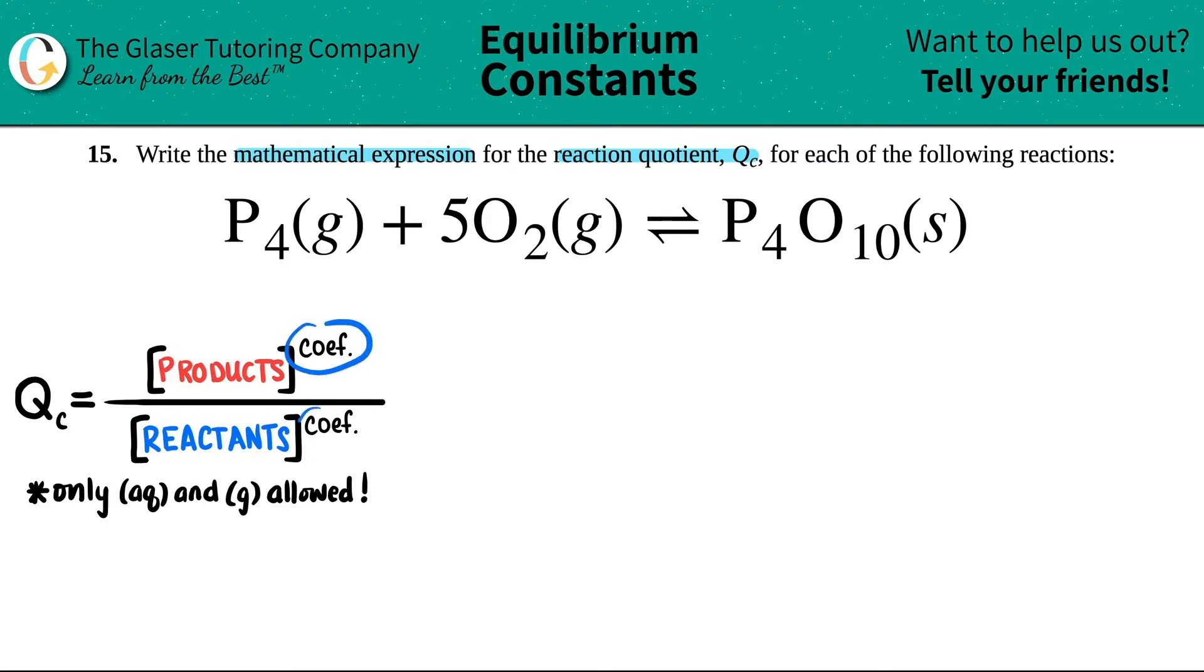And you just have to raise these values to the coefficients. And remember the coefficients are the big numbers in your balanced equation. Now there are rules here. There's two states that are allowed in the QC formula: aqueous and gas. So AQ for aqueous materials and G for gas. So the first thing is go check out those states.